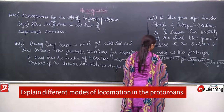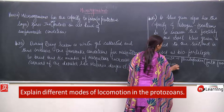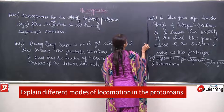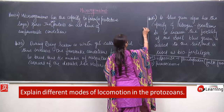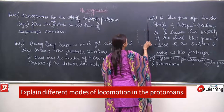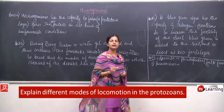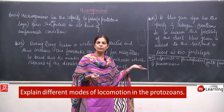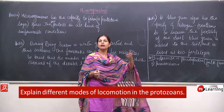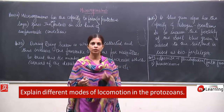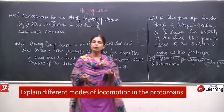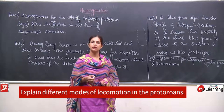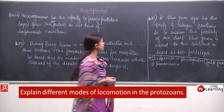If we talk about paramecium, its body is covered by cilia. Cilia are very minute thread-like structures — paramecium, amoeba are very minute and cannot be seen without a microscope. These small thread-like structures present on the body of paramecium help it move from one place to another.